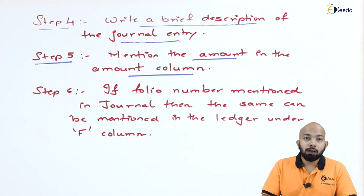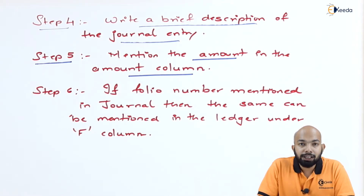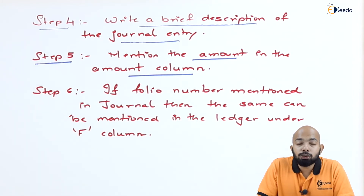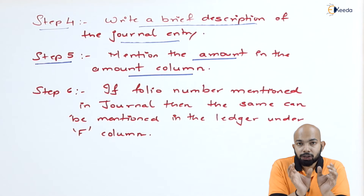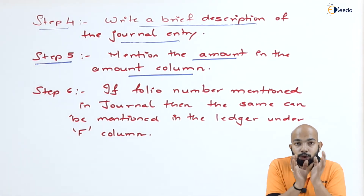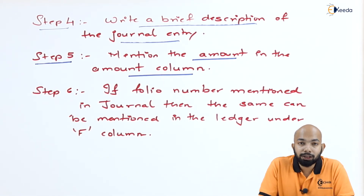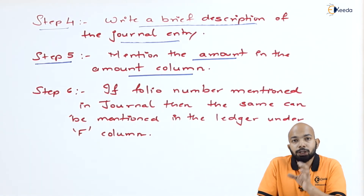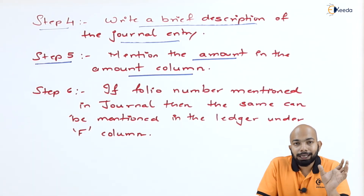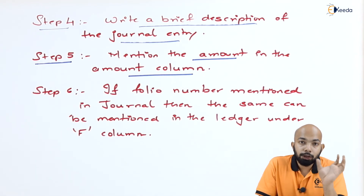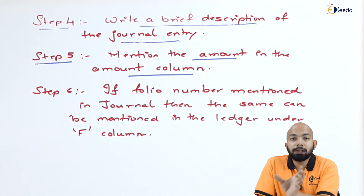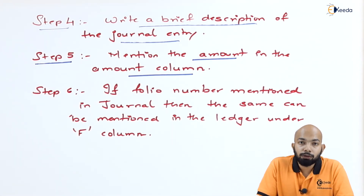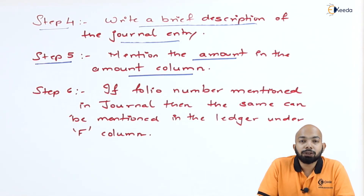Step five: every debit entry will be mentioned on the debit side and every credit entry on the credit side. Accordingly, you also need to mention the amount simultaneously in line with the date and explanation. This gives you a complete closure on that specific journal entry being posted into the ledger, which can then be further used for closure of ledger accounts and preparation of the Trial Balance.